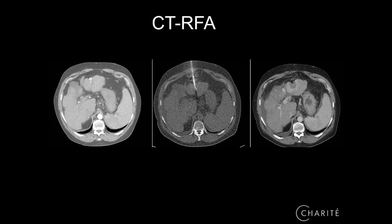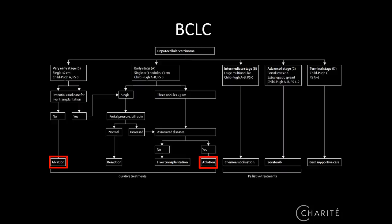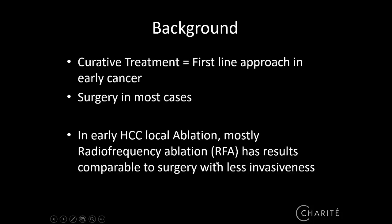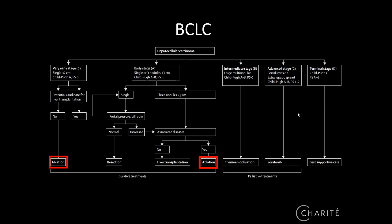Most of you are probably familiar with local tumor ablation, like CT-guided radiofrequency ablation. There are many papers published on this, and it plays a major role in tumor treatment regimens. The best-known pattern to treat tumor patients includes local ablation in the curative arm for small, early-stage cancers. For bigger tumors exceeding 3 centimeters, other techniques like chemoembolization or sorafenib are typically recommended.